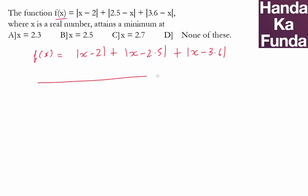Suppose you had |x - a| + |x - b| + |x - c|, you will mark those points on the number line.